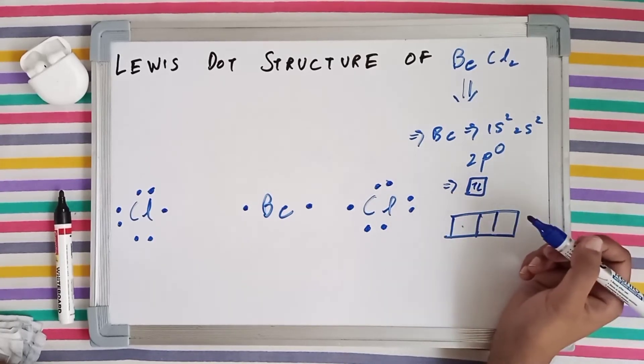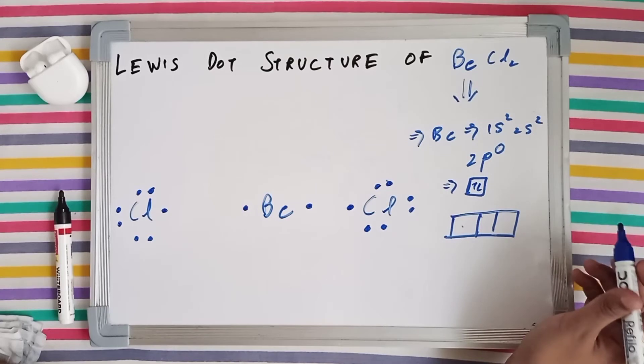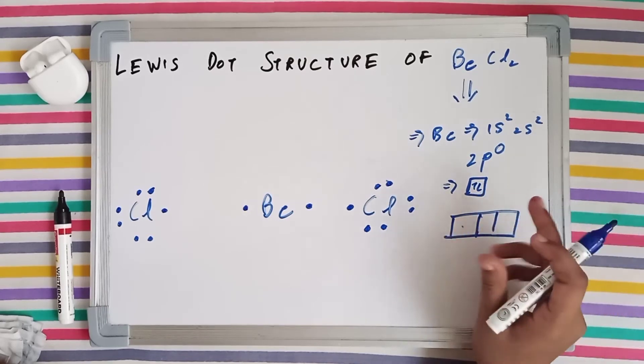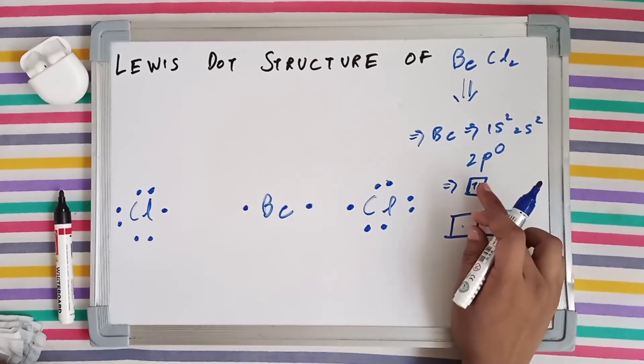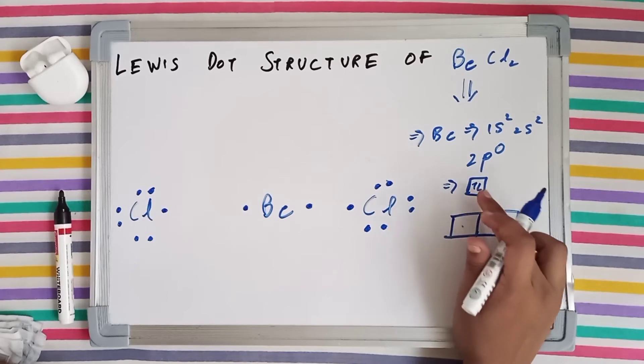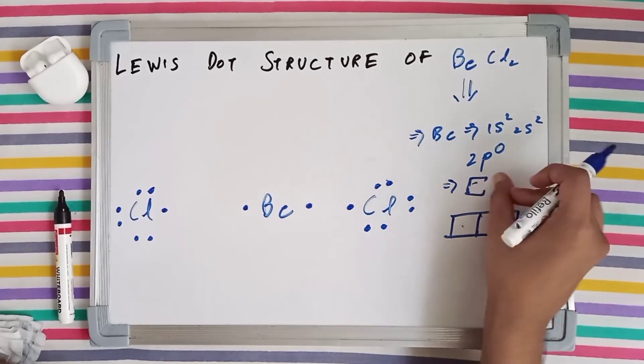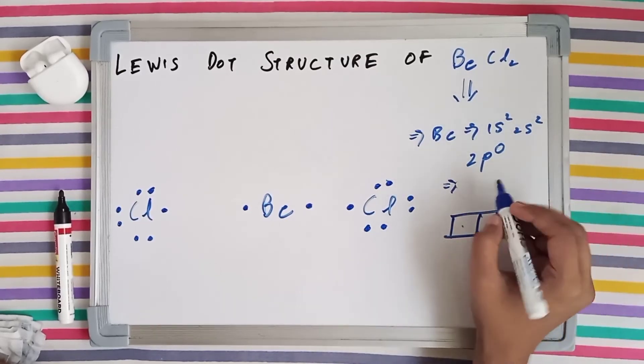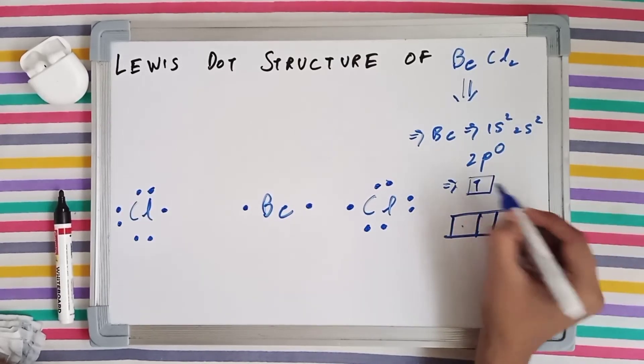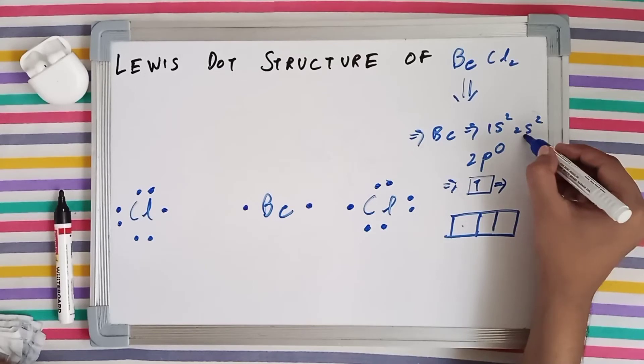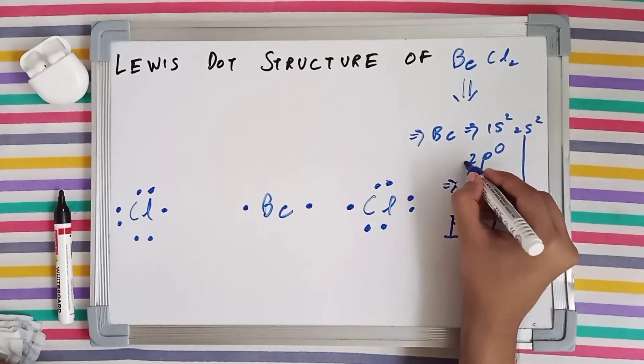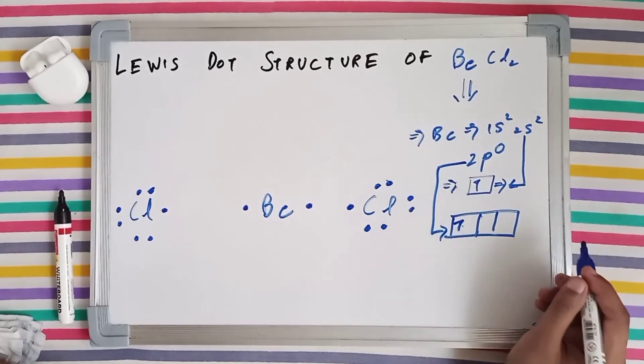So you've got 2 electrons in 2s and 0 electrons in 2p. But there's an excitation in beryllium in which one of the electrons moves or jumps from the 2s subshell to 2p subshell. So in the excited state, beryllium has just a single electron in the 2s subshell and one electron in the 2p subshell.